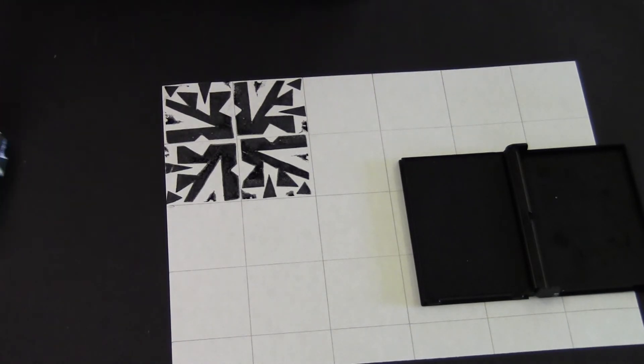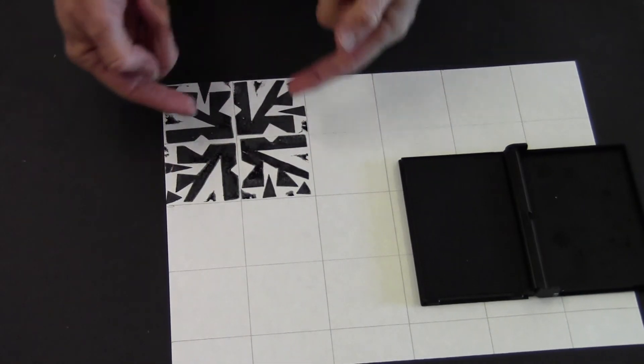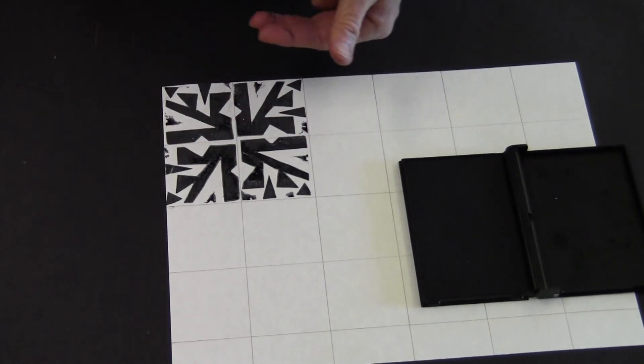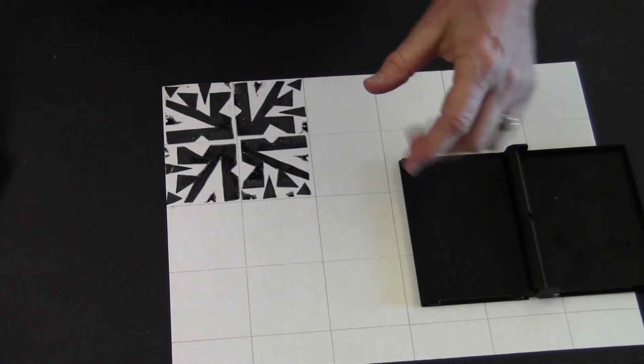And there we have a rotational turn. It kind of creates a new design where all the design meets in the middle. That is called a rotational turn.